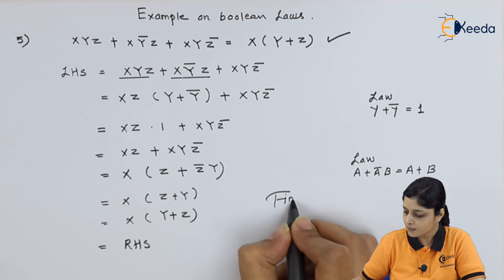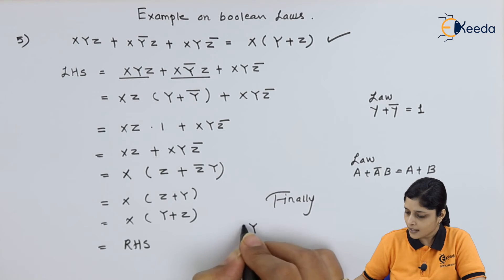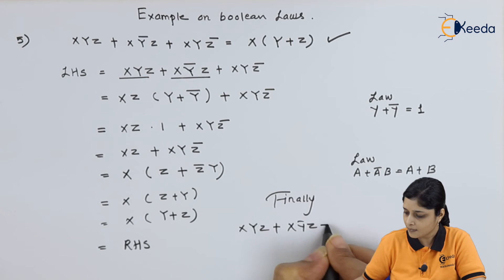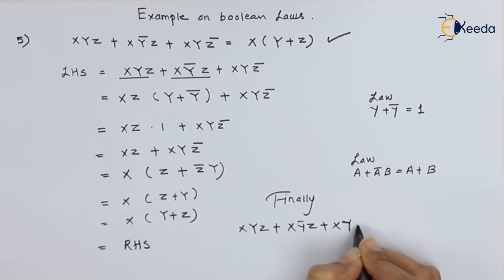So finally, we can write xyz plus xy bar z plus xyz bar equals to x in bracket y plus z.